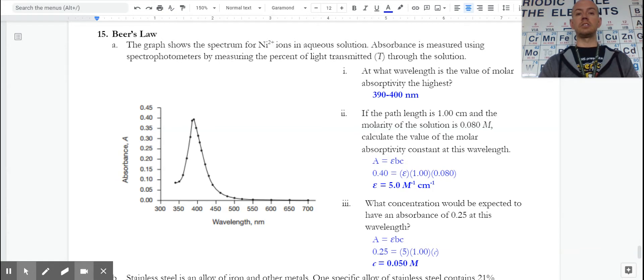We're looking at nickel ions in solution, and we have a graph here of the absorbance at different wavelengths. The highest absorbance is right around 400 or slightly below, in terms of nanometers, wavelengths.